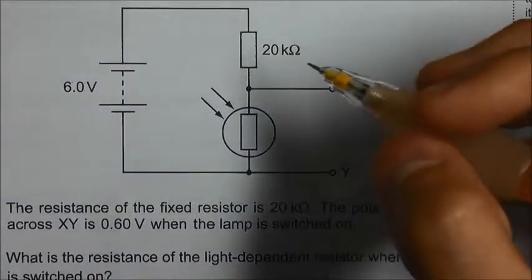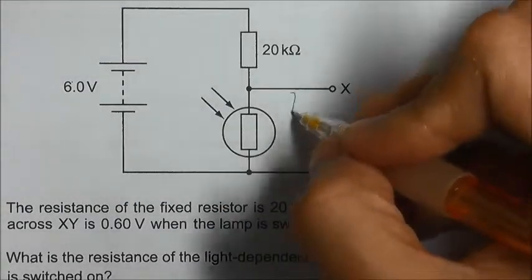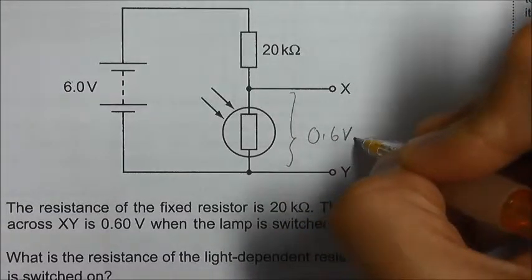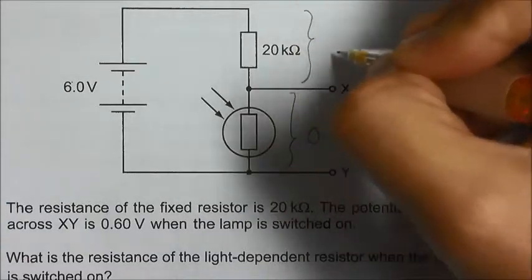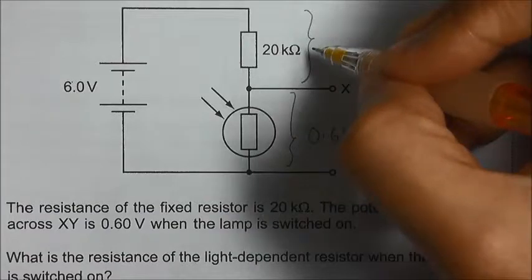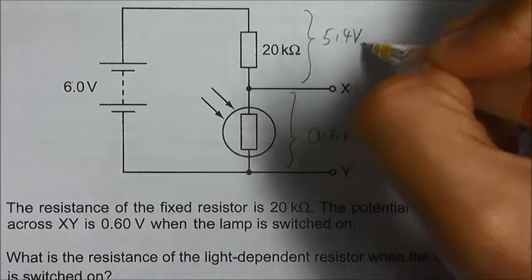When the lamp is being switched on, the potential difference across XY is 0.6 volt. That means the potential difference across the 20 ohm fixed resistor should be 6 minus 0.6, which is 5.4 volt.